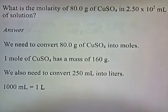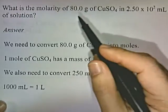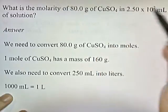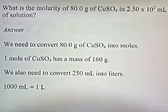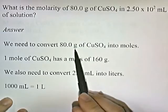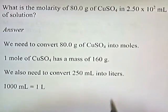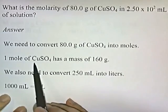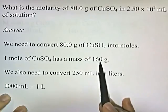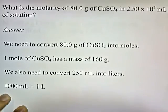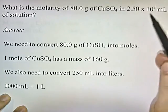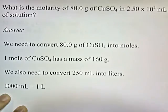What is the molarity of 80 grams of copper sulfate in 2.5 × 10² milliliters of solution? We're not given moles per liter — we're given grams per milliliter. So we need to convert 80 grams of copper sulfate into moles. One mole of copper sulfate has a mass of 160 grams. And we need to convert 250 milliliters into liters.